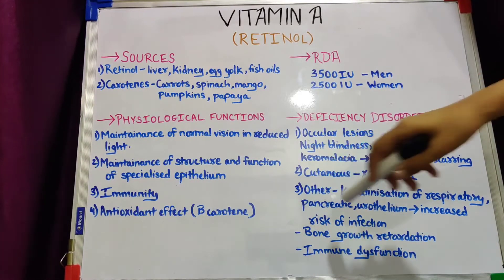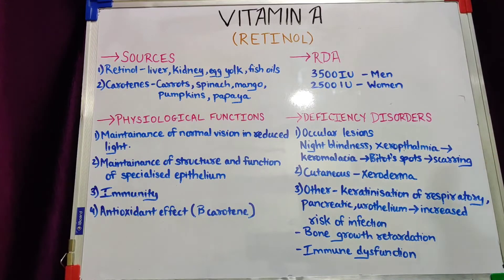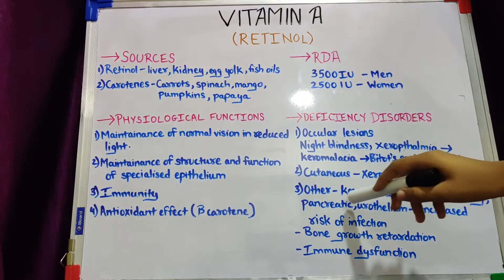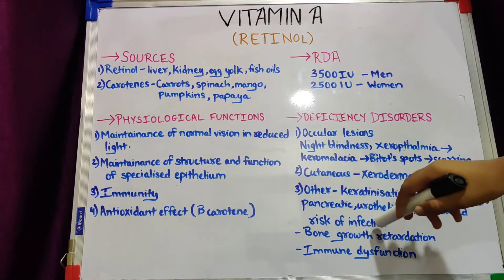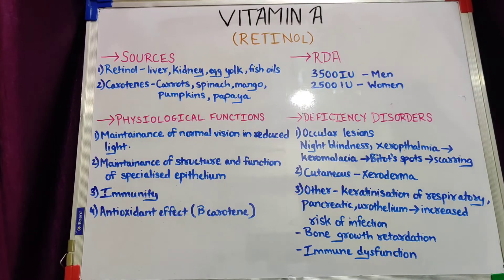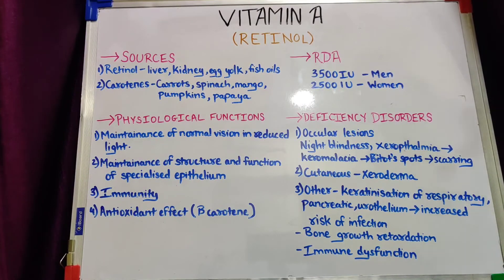Other lesions include: first, keratinization of the respiratory, pancreatic, and urothelium — these are specialized epithelium that line various systems, and in the absence of vitamin A this lining becomes defective, leading to an increased risk of infection. Second is bone growth retardation, especially in growing children. Third is immune dysfunction, since vitamin A plays an important role in building immunity, and its absence leads to impaired immune function.